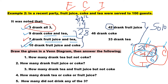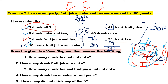Next to consider is Coke. 46 drank Coke, but we already have 7 plus 3 plus 6, which is 16. So 46 minus 16 gives us 30 who drank Coke only. For Tea, which is T, there are 33. We already have 4 plus 3 plus 6, which equals 13. So 33 minus 13 gives us 20 who drank tea only.